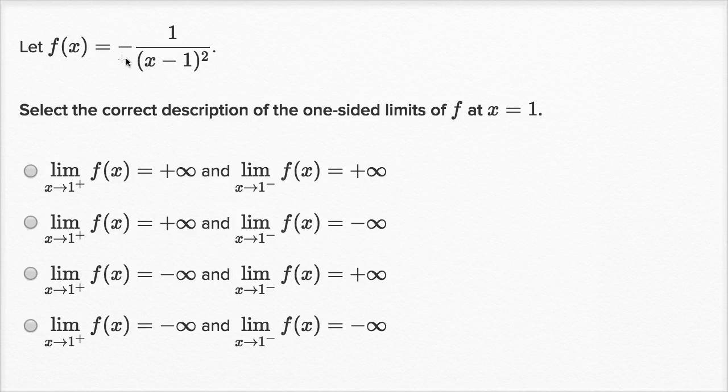Let f of x be equal to negative one over x minus one squared. Select the correct description of the one-sided limits of f at x equals one.